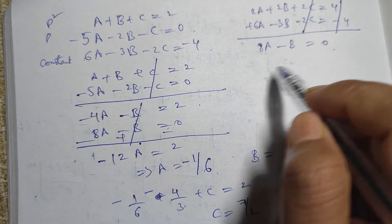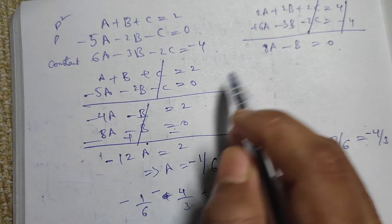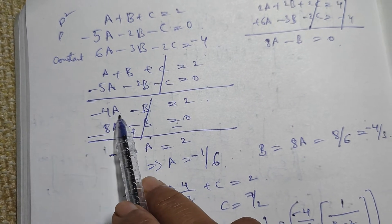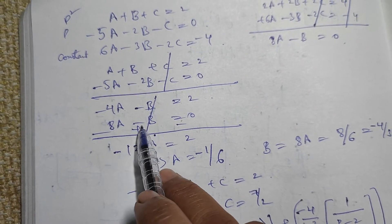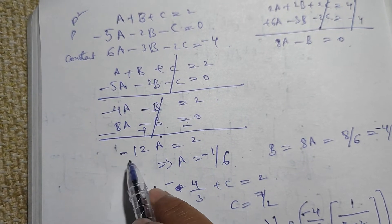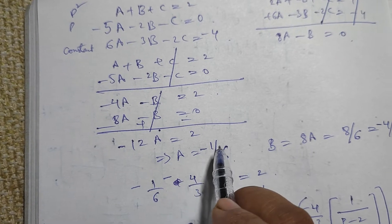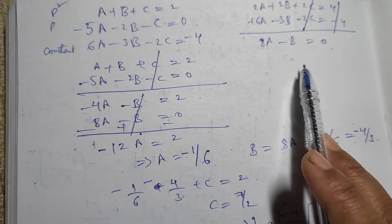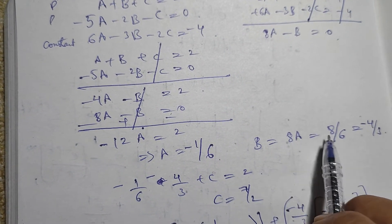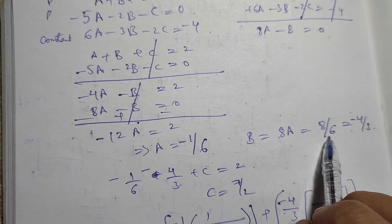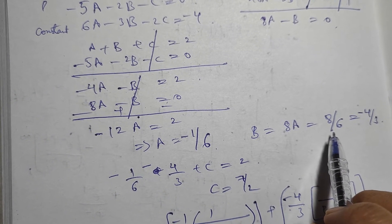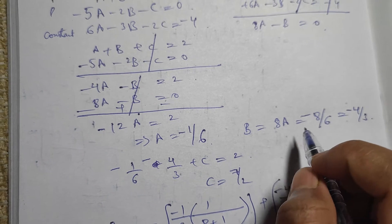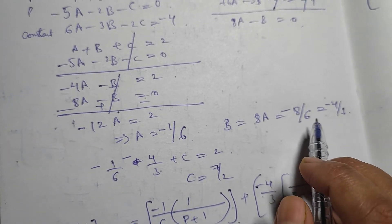Now from 8A - B = 0, we have B = 8A. Substituting into -4A - B = 2, and changing signs: -4A - B = 2 and -8A + B = 0. Adding these gives -12A = 2, so A = -1/6. Substituting back, B = 8 × (-1/6) = -8/6 = -4/3.